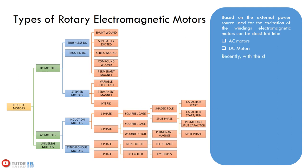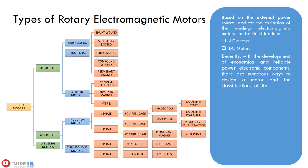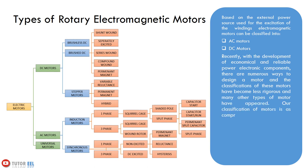Recently, with the development of economical and reliable power electronic components, there are numerous ways to design a motor and the classifications of motors have become less rigorous. Many other types of motors such as servo motors, stepper motors, and others have appeared. The classification of motors presented here was as comprehensive as possible. The largest selection is available from rotary electromagnetic radial flux type motors. All types will be discussed in detail in the next video.